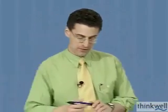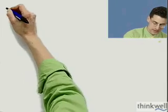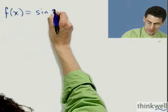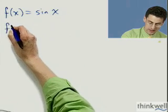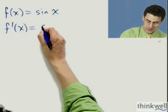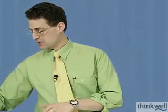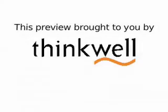So let me write that down: if f(x) equals sine of x, then f'(x) equals cosine of x. That's the derivative of sine, which we get an intuitive feel for just by looking at the graphs, remembering that the derivative represents the slope, and seeing how the slopes vary.